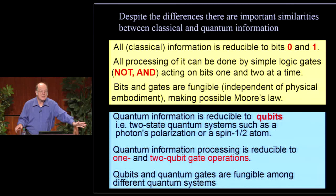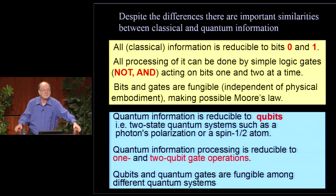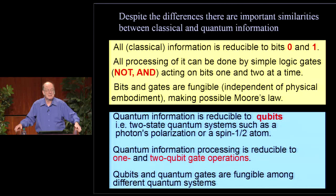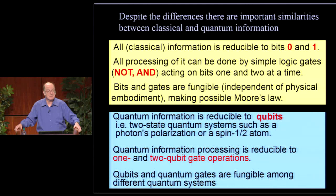There are important differences but also similarities to ordinary—what a physicist would call, and what I will henceforth call—classical information. We all know that information can be reduced to very simple primitives, just the digits zero and one. You can encode a letter of the alphabet in five bits, and all processing of information can be reduced to basic logic operations like AND and NOT acting on these bits, handling bits one or two at a time.